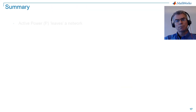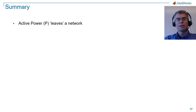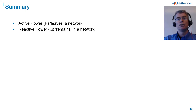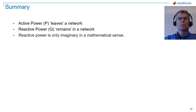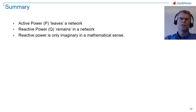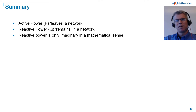In summary, active power leaves a network. In the case of a resistor, active power is converted to heat. Reactive power remains in a network — we saw how power is both consumed and supplied each half cycle for both inductors and capacitors. Reactive power is only imaginary in a mathematical sense. You may hear power engineers say that reactive power is imaginary; they're not claiming it doesn't exist — it's a very real phenomenon. They're referring to the mathematical representation in the complex domain.